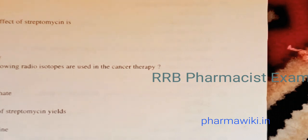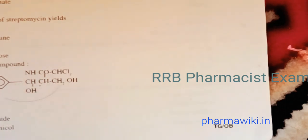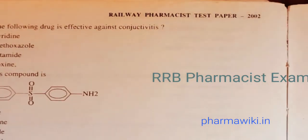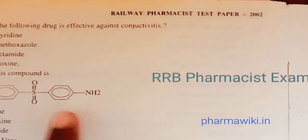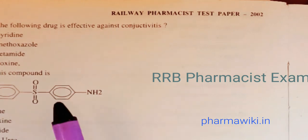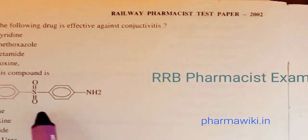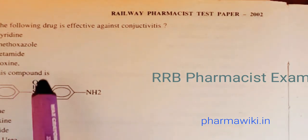Question 74: Name this compound shown — the answer is chloramphenicol. Question 75: Which of the following drugs is effective against conjunctivitis? The answer is sulfacetamide. Question 76: Name this compound — the answer is sulfisoxazole.